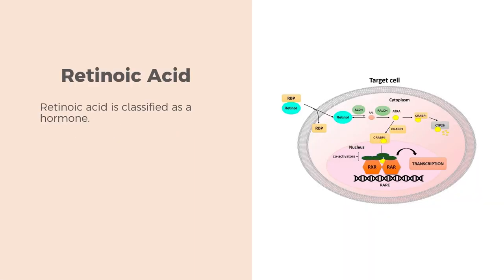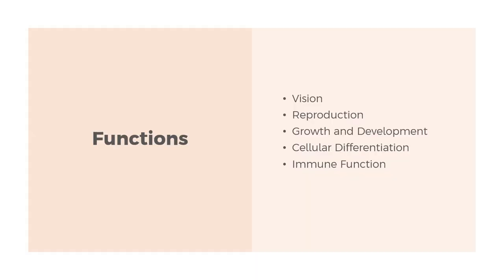Retinoic acid combines with specific nuclear receptor proteins, which bind to DNA and regulate the expression of various genes, thereby influencing numerous physiological processes. Retinoic acid is therefore classified as a hormone.